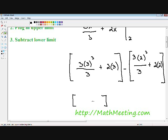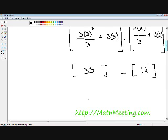If we do basic order of operations, we get 33 in the left parentheses and 12 in the right parentheses. 33 minus 12 is 11. So the definite integral of our original function, 3x squared plus 2x from 2 to 3, equals 11. That's our final answer.